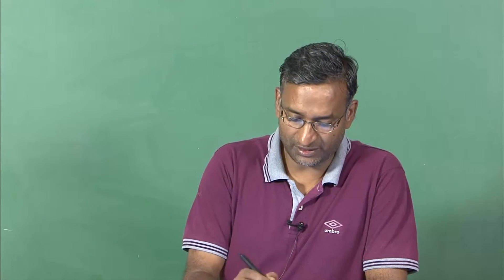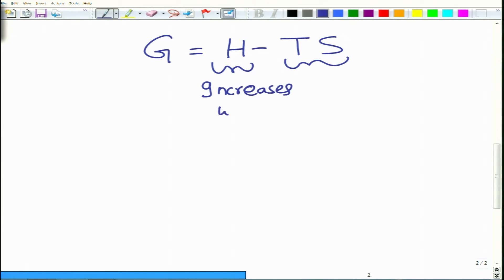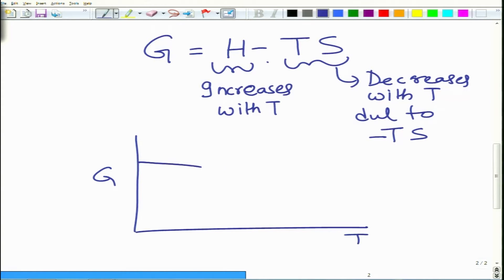However, the overall term G — G is equal to H minus TS — so H increases with temperature, but this term decreases because of the negative sign due to the minus TS term. As a consequence, if you plot free energy as a function of temperature, the free energy tends to decrease with temperature. It is the relative change of free energy of various phases with temperature that determines which phase will be stable and which phase will not be stable at a given temperature.